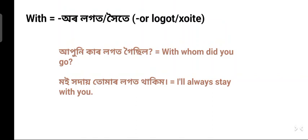'Ka' is the oblique form of 'kun' which means who; 'kar' means whose; so 'karlogot' means with whom. Next example: 'Moi khadai tumarlogot thakim' — I will always stay with you. 'Moi' means I, 'khadai' means always, 'tumarlogot' means with you, and 'thakim' means I will stay. 'Tumar' is the oblique form of 'tumi', which means you (familiar).